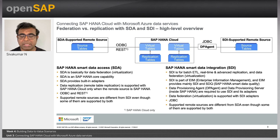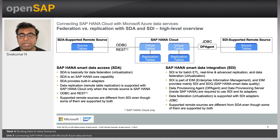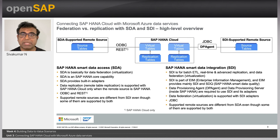But in data federation, the data still resides in the source system, and anytime a query is fired on that source system via a target system, the query is federated. You create a facade or a virtualization for the source system in your target system. We will create a virtual table for the physical table that exists in Azure Data Explorer in HANA Cloud, and all queries fired on this virtual table will be delegated or federated to Azure Data Explorer every time, with results fetched on the fly.